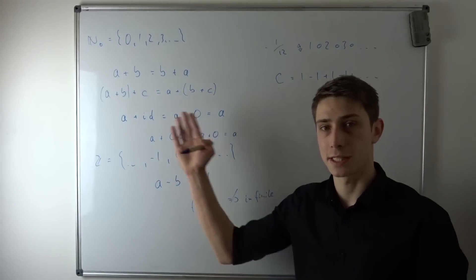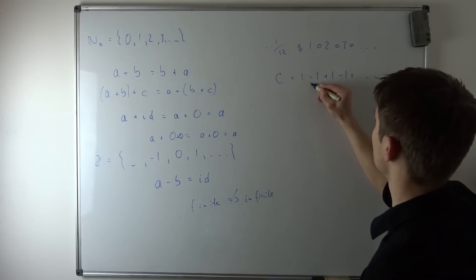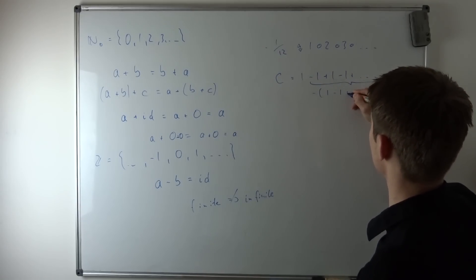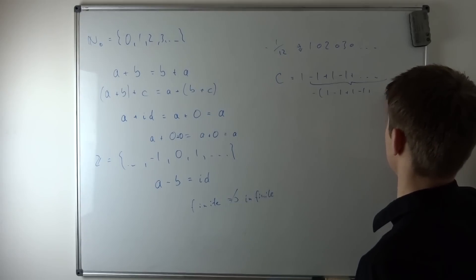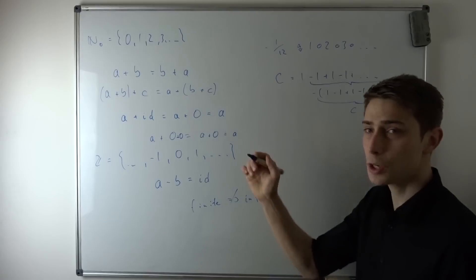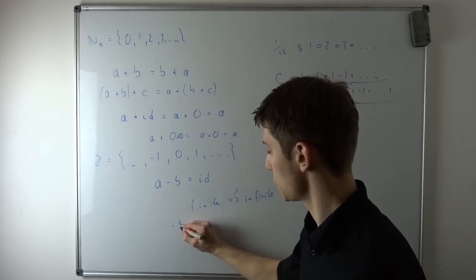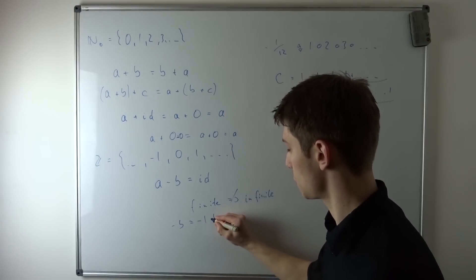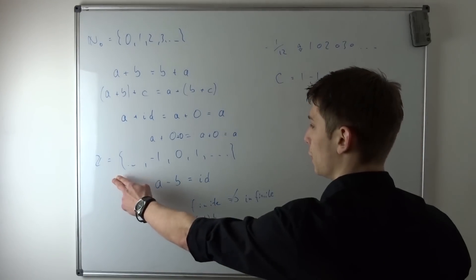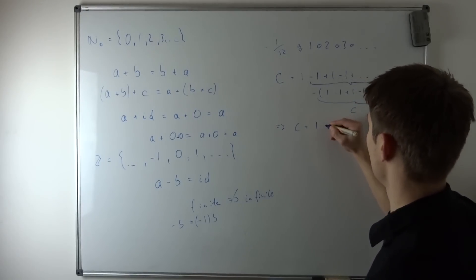Let's just say we are going to apply some of those rules to this series. We could say this is equal to — we can factor out a minus one — so that's minus one times (one minus one plus one minus one plus dot dot dot). This is just c, so what we end up with is that c equals one minus c.